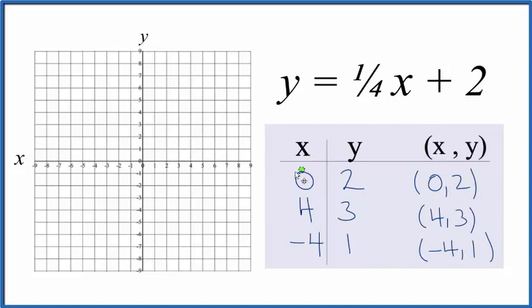So we go to zero for x, that's right here, and then y is two, up two. We go to four for x, and then y, we go up one, two, three.